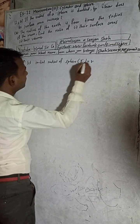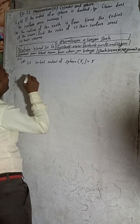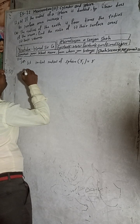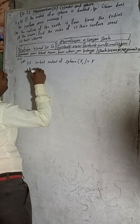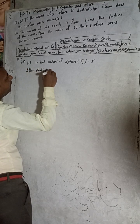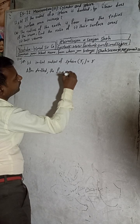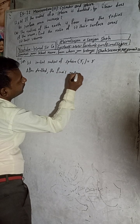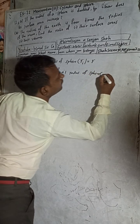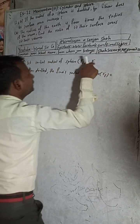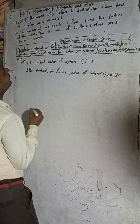When the radius is doubled, the final radius of the sphere becomes 2R. Now we will find the initial surface area.